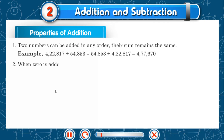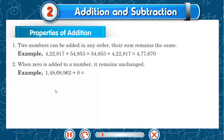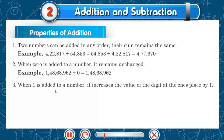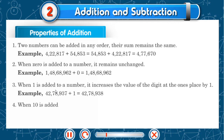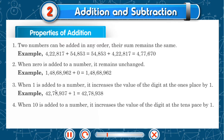When 0 is added to a number, it remains unchanged. Example: 1,48,68,962 plus 0 is 1,48,68,962. When 1 is added to a number, it increases the value of the digit at the ones place by 1. Example: 42,78,937 plus 1 is 42,78,938. When 10 is added to a number, it increases the value of the digit at the tens place by 1.